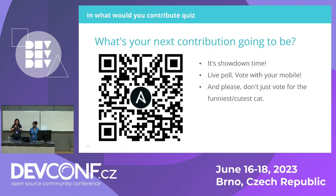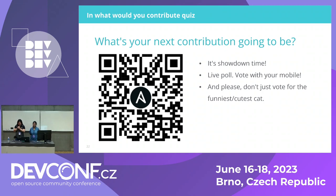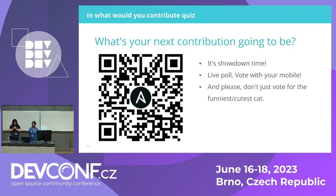Now it's audience participation time. Hopefully you can scan this QR code — take out your phones and start scanning. This slide set was initially put together by Leo for Red Hat Summit Ansible Community Day last month. Please vote, and as Leo said, don't just vote for the cutest cat — think about what you might be interested in contributing or what your strengths and interests are.